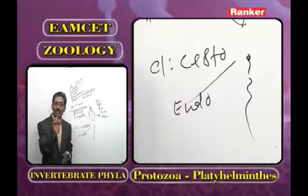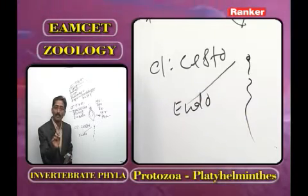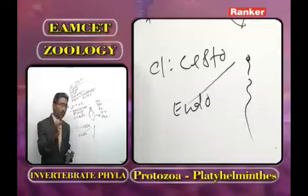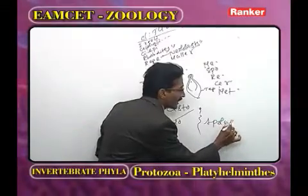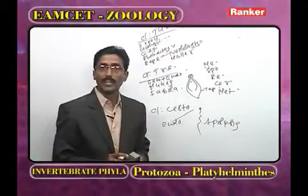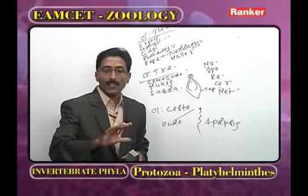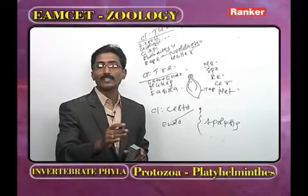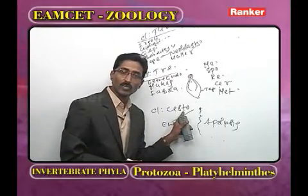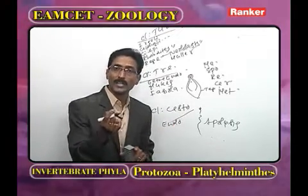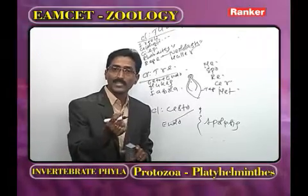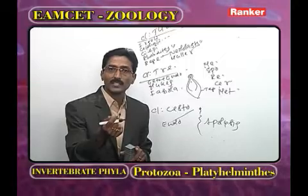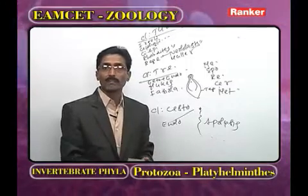In Cestoda, a process called apolysis helps transfer embryos from one host to another and aids dispersal. In the life history of Cestoda, the first embryo is hexacanth, the second is oncosphere, and the third is cysticercus cellulosae, which finally becomes the adult.